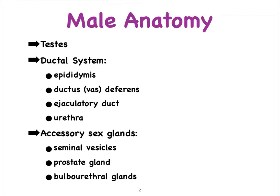We can divide the male reproductive system into three components. We have the two testes, one testis in each testicle. Some people interchange testes with testicles, but it's not quite accurate because within the testicles, in addition to the testes, we also have the epididymides, of which there are two. Leaving from the epididymides we have the two ductus deferens, or vas deferens, and two ejaculatory ducts that then merge with the single urethra.